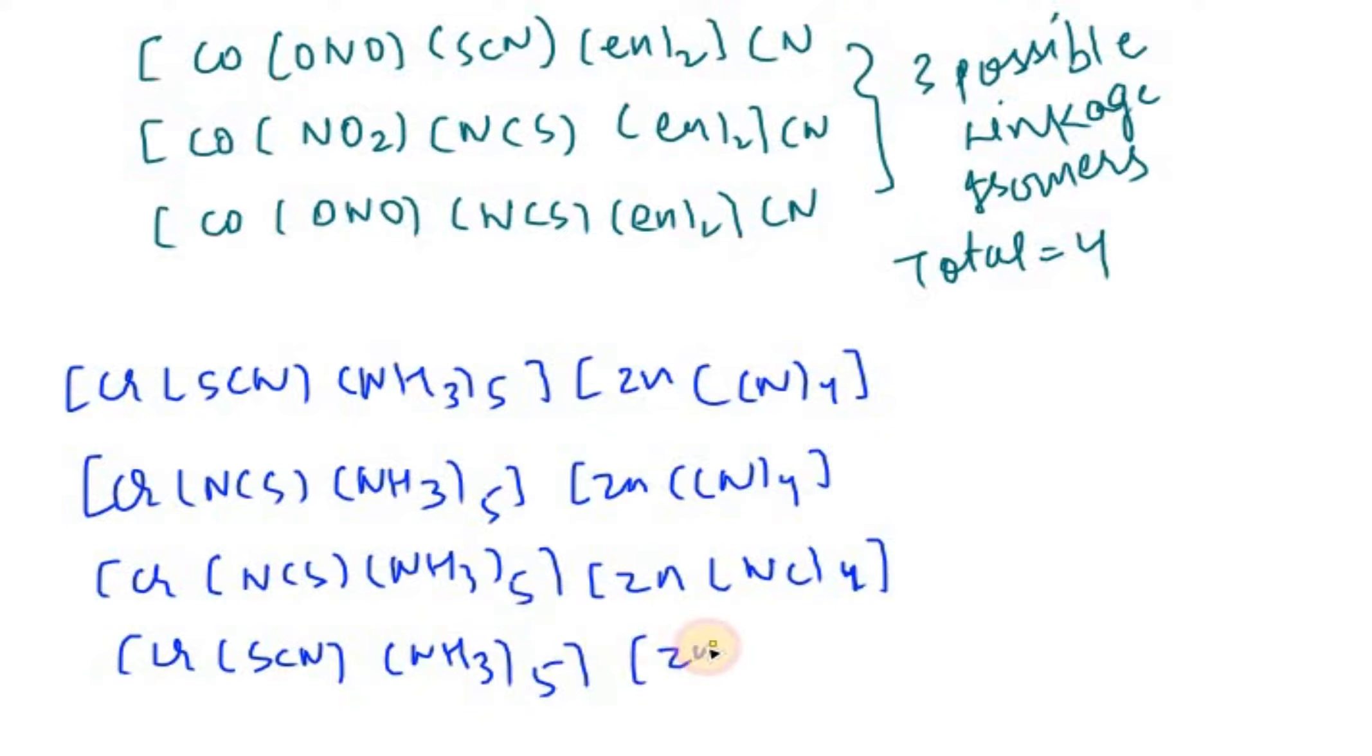Here we have two possibilities: one is SCN, one is NCS. And here also we have two possibilities: one is CN and one is NC. But here we have total four molecules, so there are a lot of cases. Like one is CN and the rest are NC. If we total all the possible cases, how many possible linkage isomers do we have of this compound? We have nine. And if we talk about the total number, we'll be having ten.